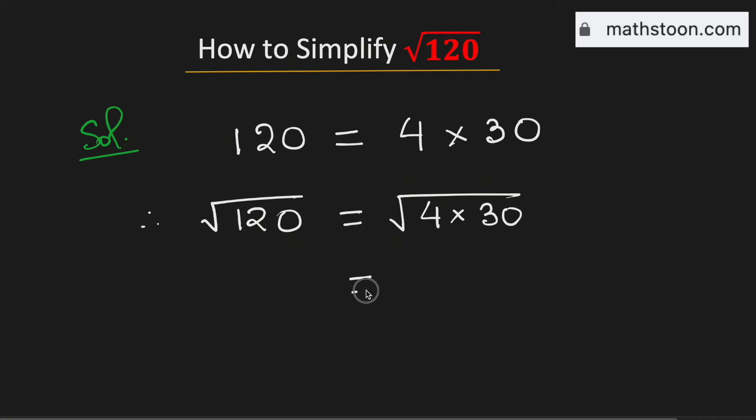Which can be broken up into square root of 4 times square root of 30.